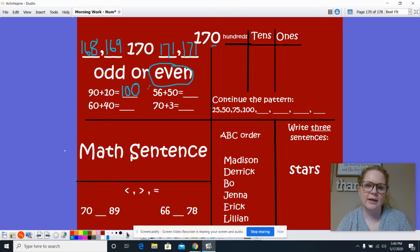56 plus 50. In our tens, ones place, sorry, in our ones place we have six plus zero, so we have six in the ones place. And then five plus five in the tens place, so we put 10. And now we have 56 plus 50 equals 106.